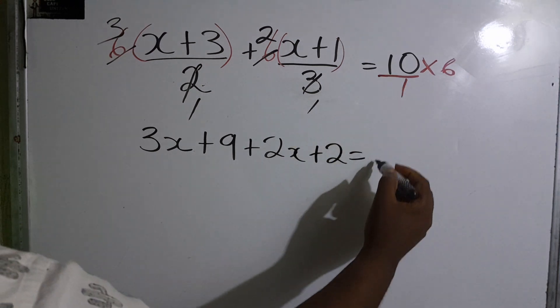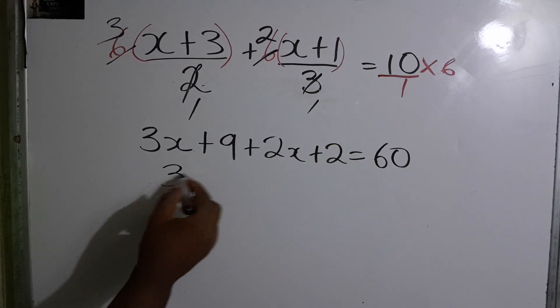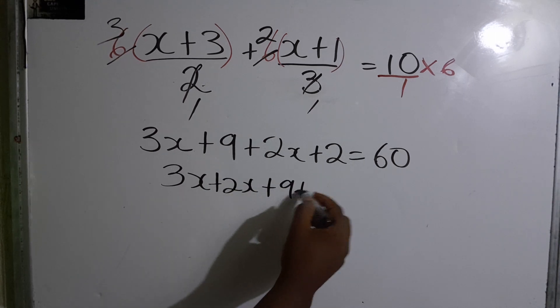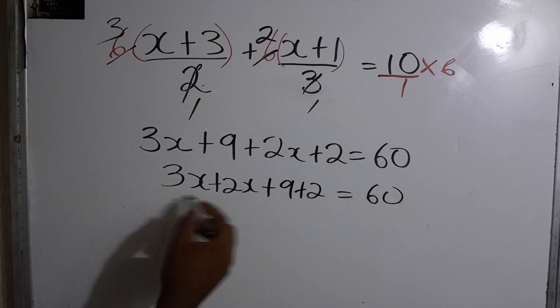And of course, 10 times 6 which is 60. To group the like terms, so it will be 3x plus 2x plus 9 plus 2 is equal to 60.